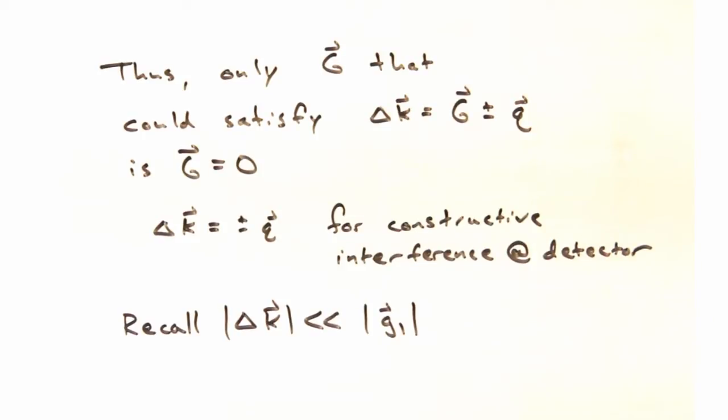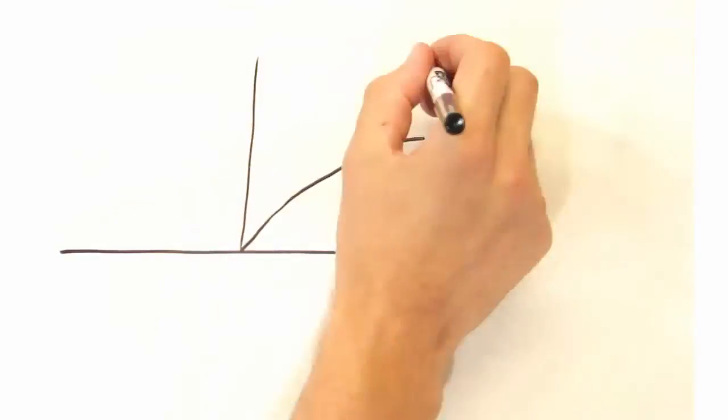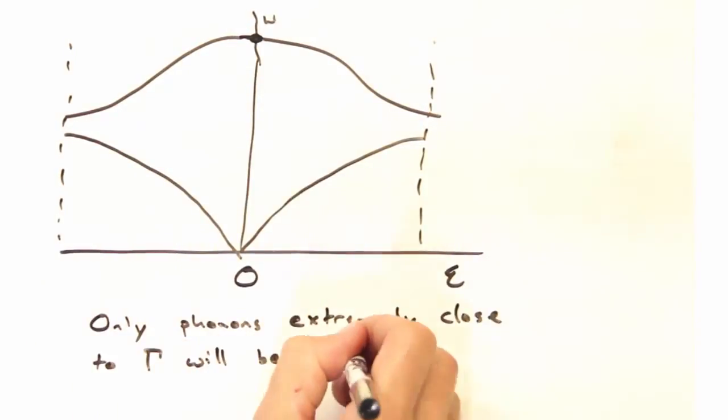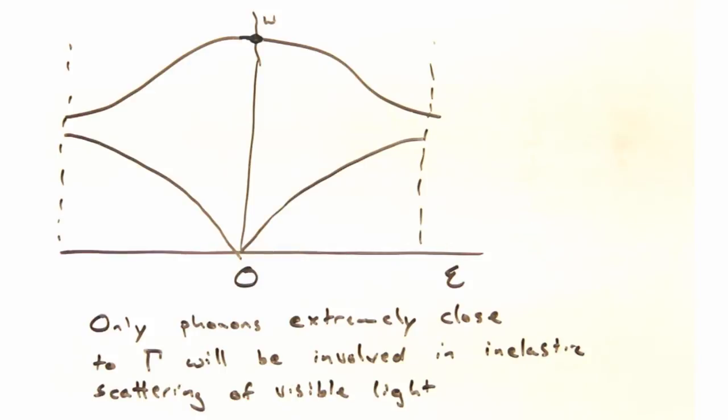which is to say it's way smaller than g1. And if it's way smaller than g1, that means that only phonons that are extremely close to gamma are going to be involved in inelastic scattering of visible light, which is to say those phonons right up here.